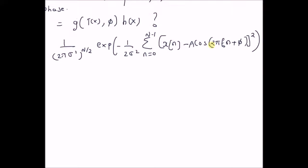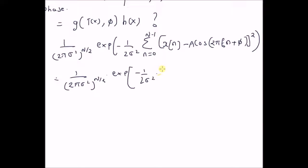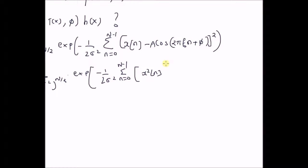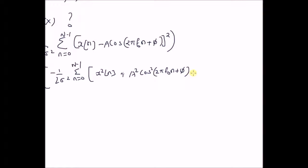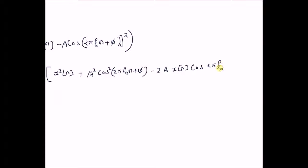So, let us see if this function can be factorized as a function g of T(x) and h(x). Expanding the squared term using (a − b)² = a² + b² − 2ab, we get: x²(n), then b² which is A²·cos²(2π·f₀·n + φ), and then the cross term, which is minus 2A·x(n)·cos(2π·f₀·n + φ).